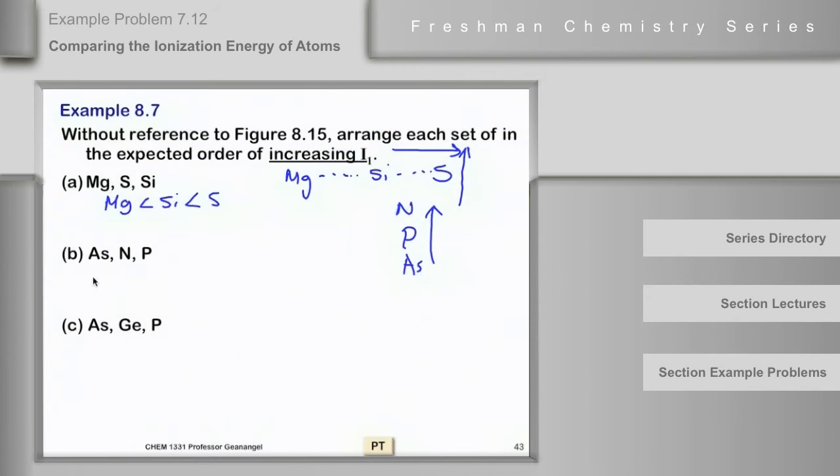So arsenic will have the lowest, then phosphorus, then nitrogen. Okay, questions on that one?